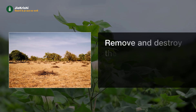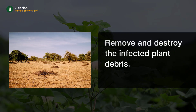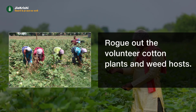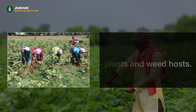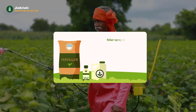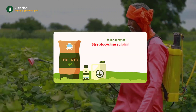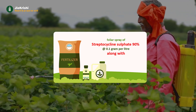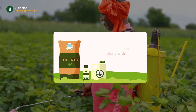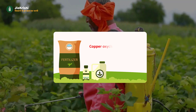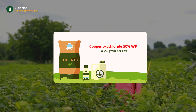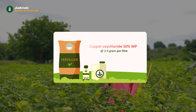Remove and destroy the infected plant debris. Rogue out the volunteer cotton plants and weed hosts. Apply foliar spray of streptocycline sulfate 90% at the rate of 0.1 gram per liter, along with copper oxychloride 50% WP wettable powder at the rate of 2.5 gram per liter.